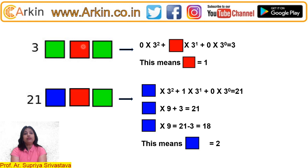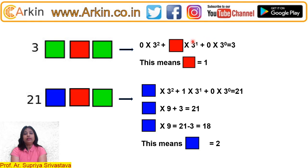Now we know that green equals 0 and the base is 3, so we will try to find out the value of red. We have 0 into 3¹ equal to 0, so 3 × red = 3, which means red equals 1.